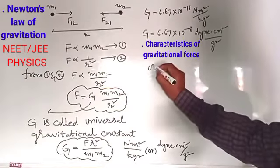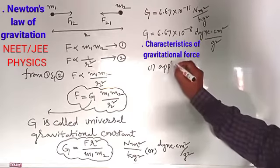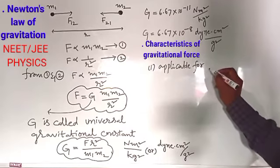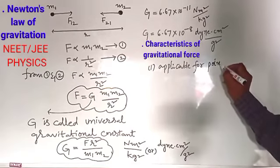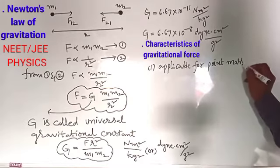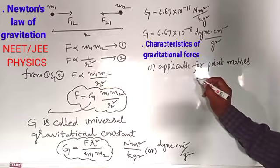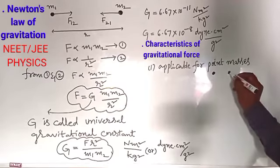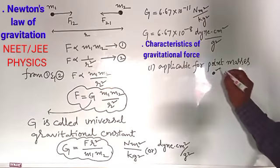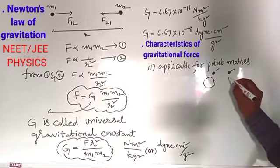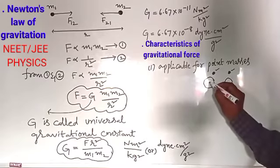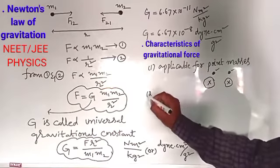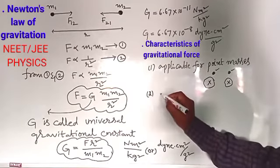Now, characteristics of gravitational force. The first characteristic is that it is applicable for point masses only. Take this small mass and this other small mass — it is applicable for these two point masses only. It is not applicable for extended bodies, meaning bigger bodies. For extended bodies, the integration method is used to calculate the total gravitational force acting between two masses.